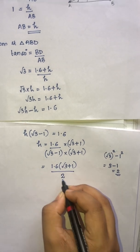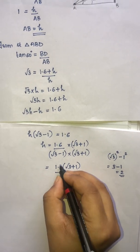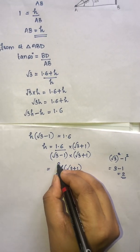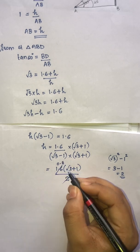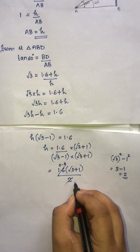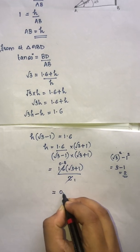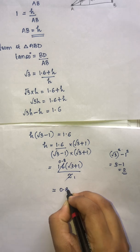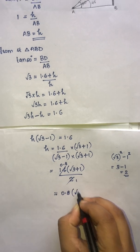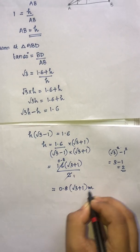The 2 in the denominator cancels with the 1.6, giving 0.8. Therefore, the height of the pedestal is 0.8 times (root 3 plus 1) meters.